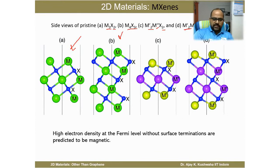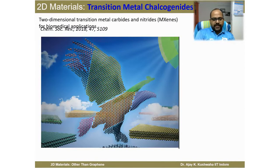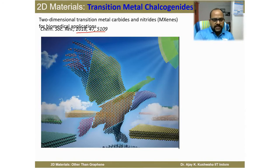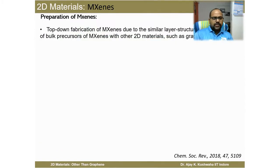A beautiful image in a Chemical Society Reviews article compares a 2D MXene material to the wing of a bird — using such a wing, one can achieve very great heights. Similarly, using these amazing materials, we may envision new and very advanced future device applications. MXenes can be prepared using the top-down approach, similar to graphene, since we already have the MAX phase or non-MAX phase precursors available.